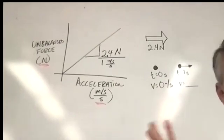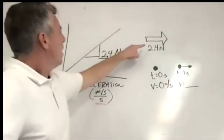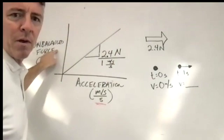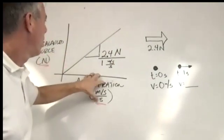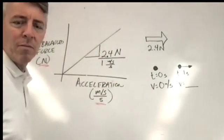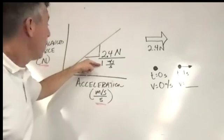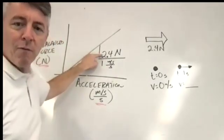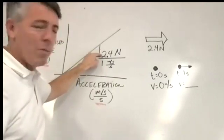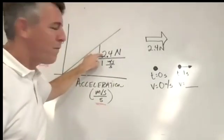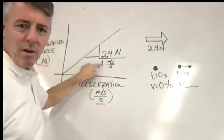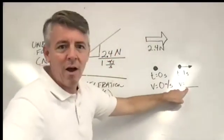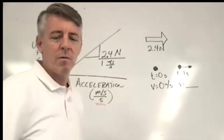So let me recap some things here. If there's 2.4 newtons of unbalanced force, how much acceleration is there because of that 2.4 newtons? 1 meter per second per second. So to rephrase: if you apply an unbalancedness of 2.4 newtons to your exact object, it'll speed up by 1 meter per second per second. So if this is true, how fast is it moving after 1 second? It's moving 1 meter per second.